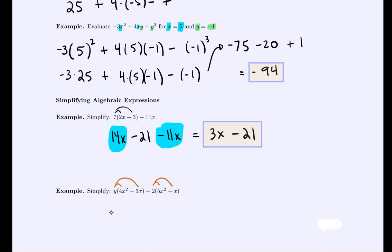So then we would get 4x squared y. Or you could write it as y times 4x squared. The order inside of multiplication doesn't matter. Plus 3xy plus 10x squared. And generally, by notation, the number comes first, then the x term, then the y term. Plus 2x.